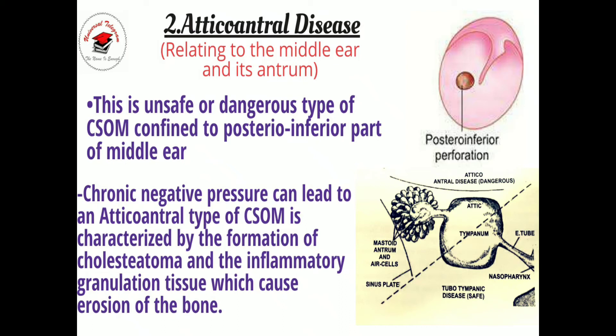If perforation occurs in the posterior inferior part, the infection leads to the mastoid air cells, causing bony erosion or mastoid tenderness — which is why it is called the unsafe or dangerous type of CSOM. The chronic negative pressure in this region leads to the atticoantral type, which is characterized by the formation of cholesteatoma and inflammatory granulation tissue, causing erosion of the bone.